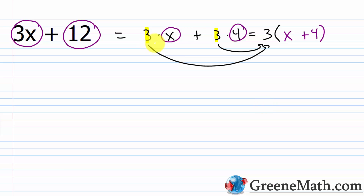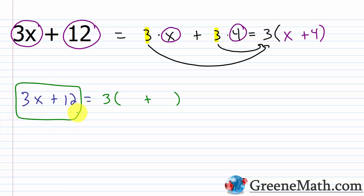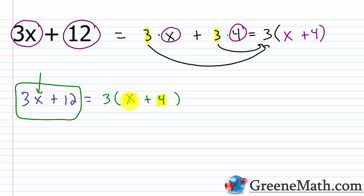In most cases you won't take the time to write things out that way. To speed up the process: take 3x plus 12, find the GCF — which is 3 — and write a 3 outside of a set of parentheses. Since you're multiplying each term by 3 to get back to the original, and multiplication and division are opposites, just divide each original term by 3 to get what's missing inside. 3x divided by 3 gives x; 12 divided by 3 gives 4. Write the GCF outside, divide each term by the GCF — that gives you each spot inside.